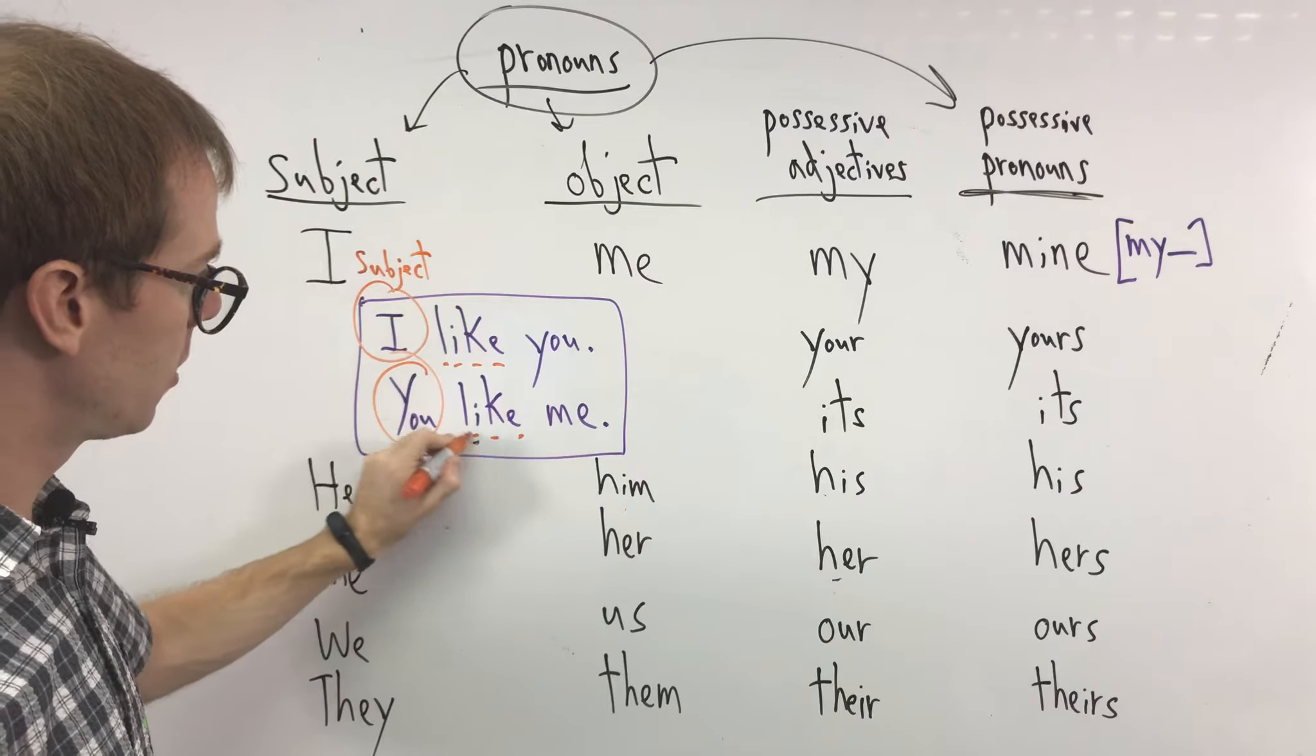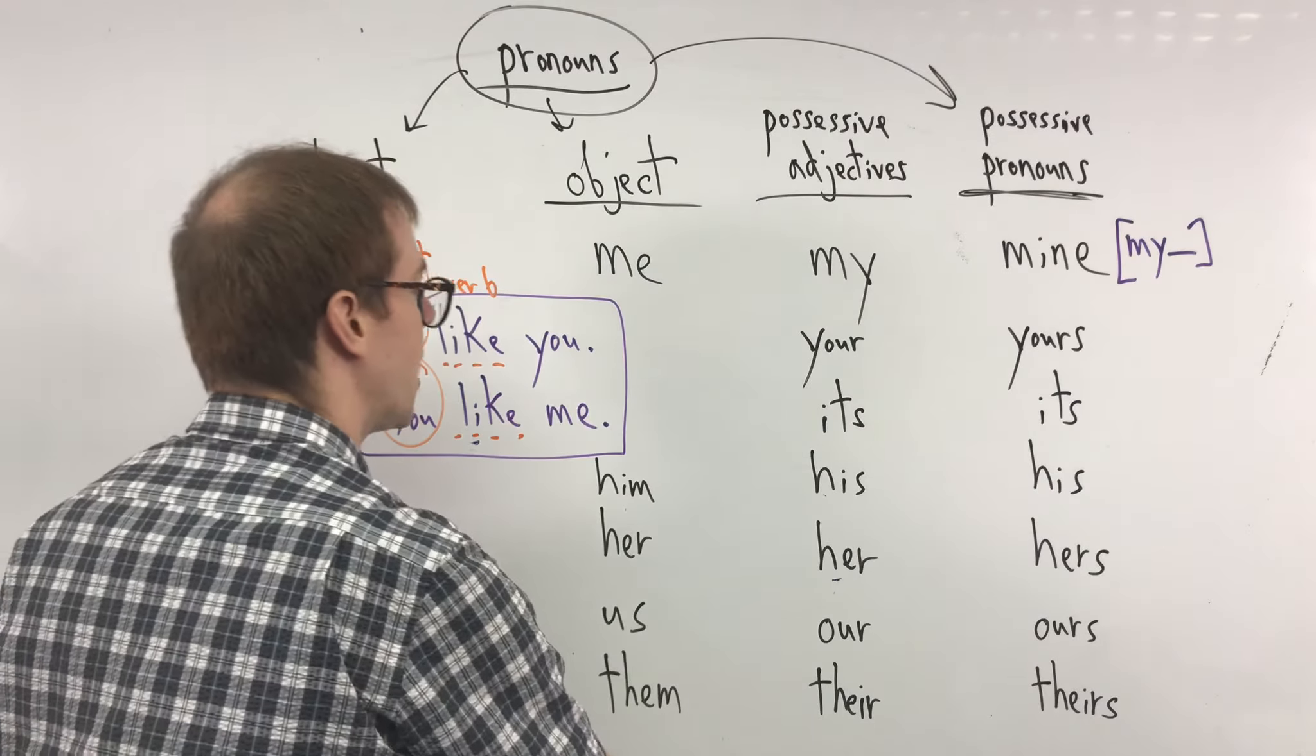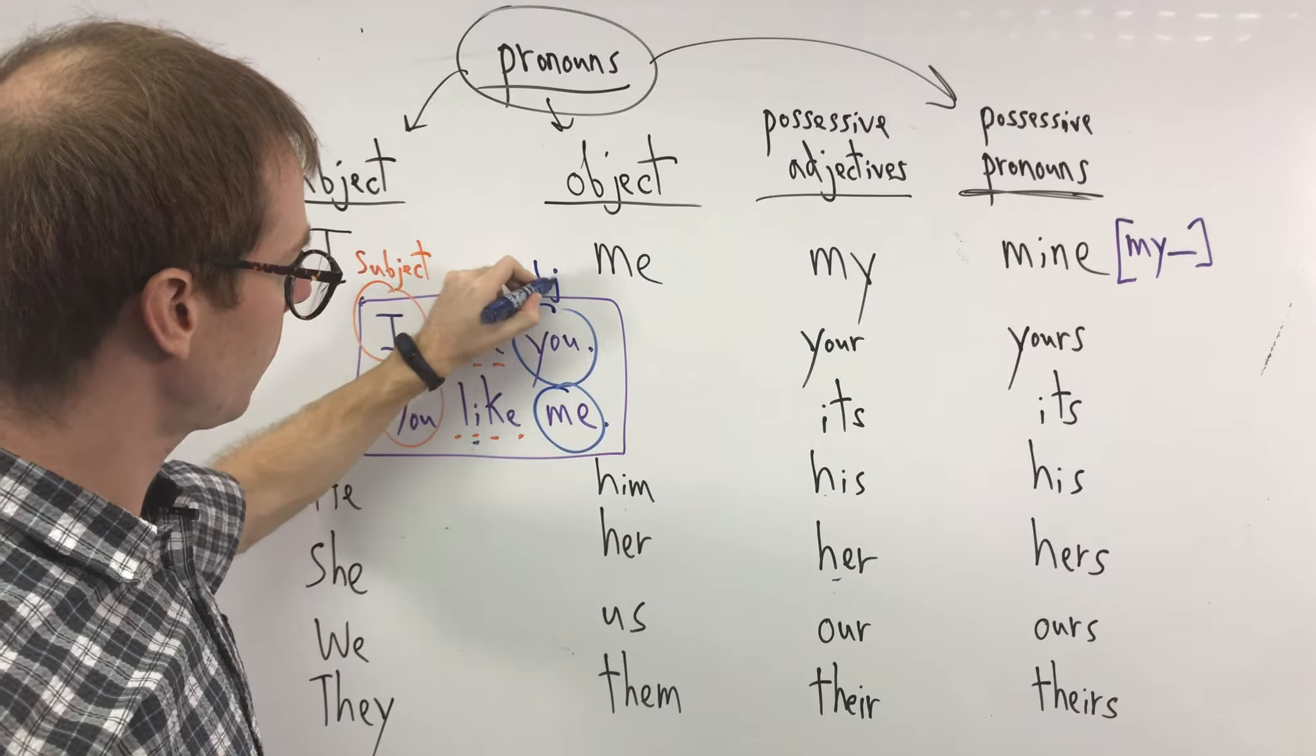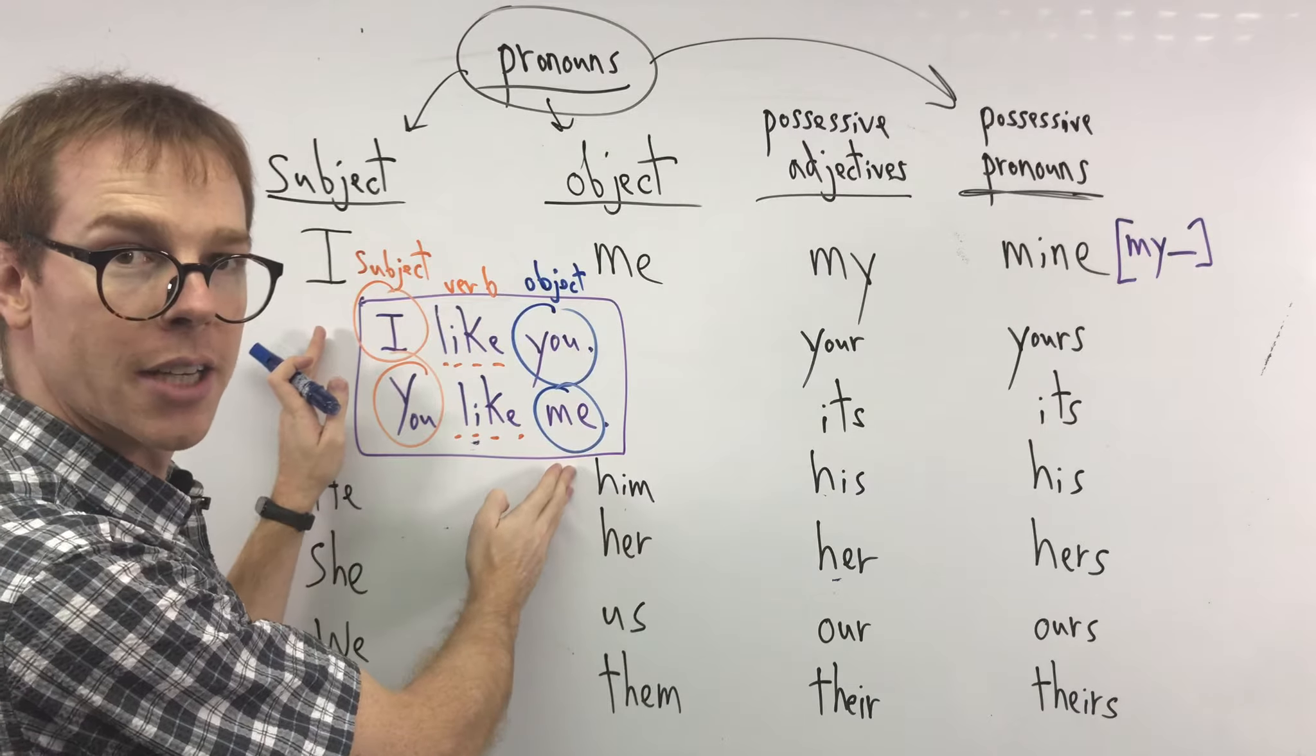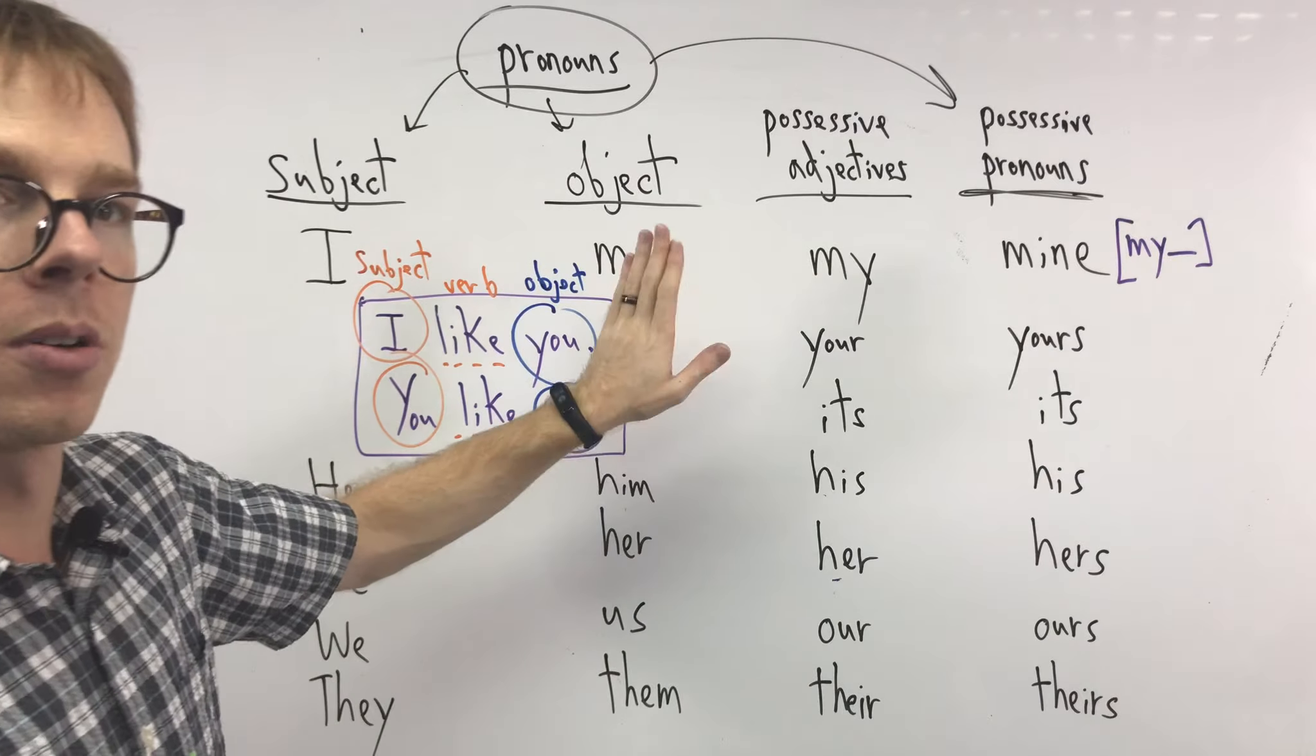Then this little guy right here is called the verb, and then at the very end, this is called our object. Our object. I like who? I like you. Subject, verb, object. So for us, we have our subjects already. Now let's look at how we change to object.